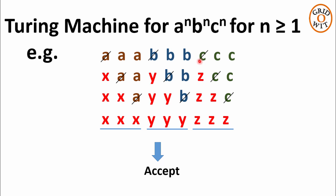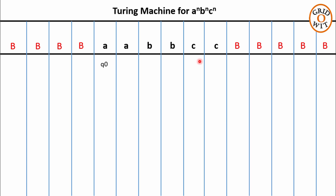Let us check one more example to see how many states we require. For n equal to 2 we have two a's followed by two b's followed by two c's. Initially q0 is pointing to the leftmost a. On reading a, q0 will replace it with x, takes a right move, and changes its state to q1.